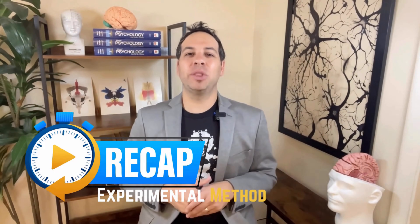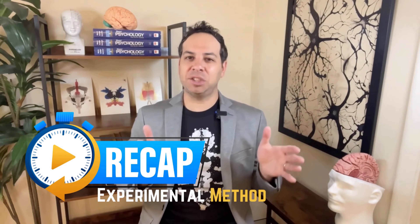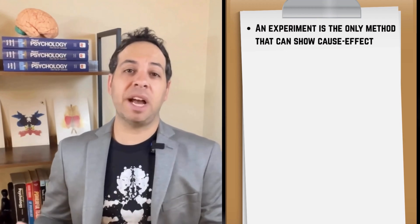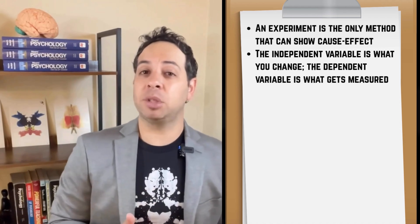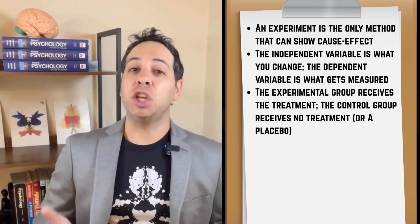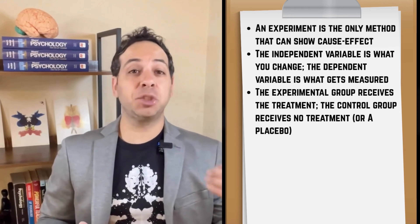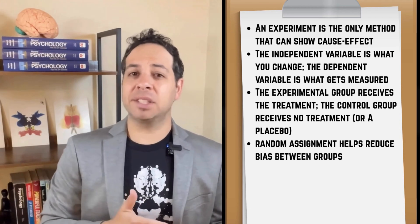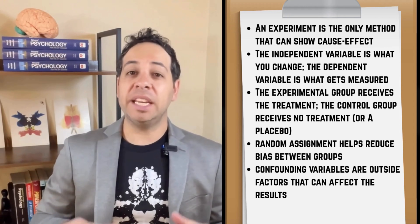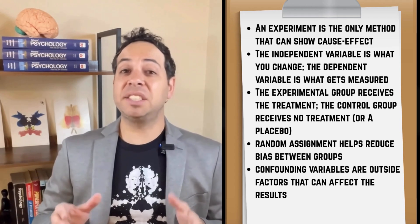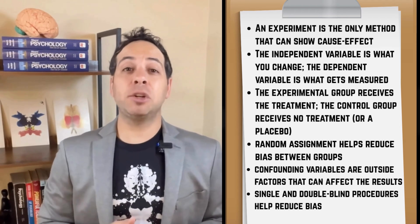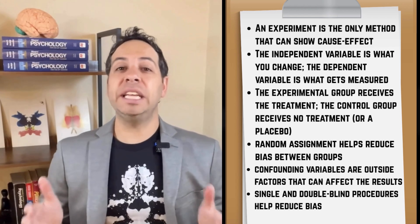Let's lock in with a quick recap. The experimental method is the only research method in psychology that can show cause and effect. Every solid experiment starts with two key variables: the independent variable is what you change, and the dependent variable is what you measure. You need two groups — an experimental group that gets the treatment and a control group that doesn't — so you can make a meaningful comparison. Random assignment is essential to reduce bias. Confounding variables can sneak up and mess with your results, so you've got to control for them. Use single blind or double blind procedures to avoid bias from expectations.